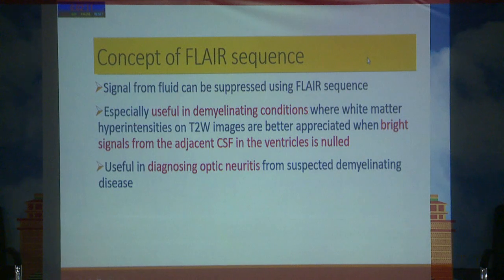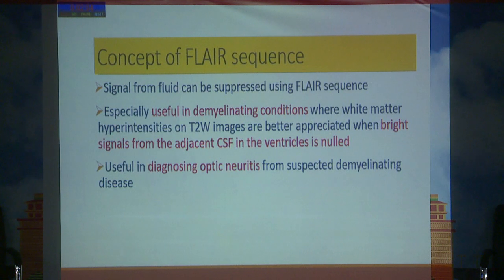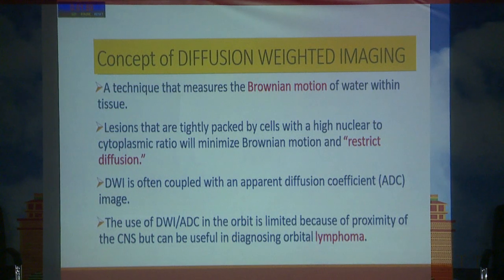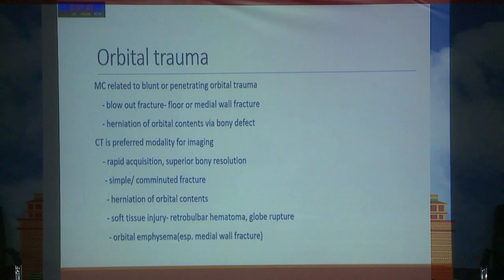The FLAIR sequence — fluid attenuation inversion recovery — is useful in demyelinating conditions like optic neuritis associated with multiple sclerosis, where periventricular lesions can be seen. Diffusion weighted imaging is important for lesions with tightly packed cells that show restricted diffusion, which is important in cases of orbital lymphoma.